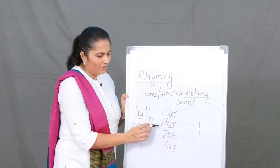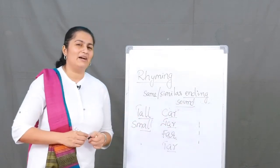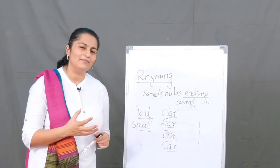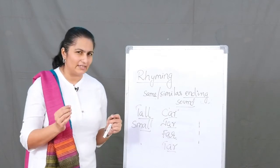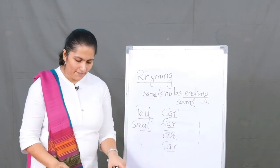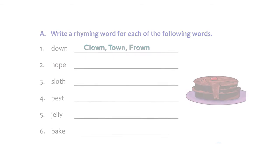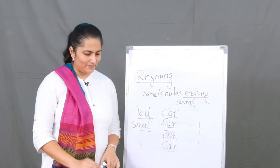Rhymes add a fun and interesting element to your conversation or writing — whatever you write or speak gets a little more fun when you add rhyming words. You can go ahead and finish the exercises on page number 11. For example, the first one — 'down' — I have written: clown, town, frown. That's a list of words that rhyme with 'down'. I'm sure you can go ahead and write the rest, and you will enjoy it too.